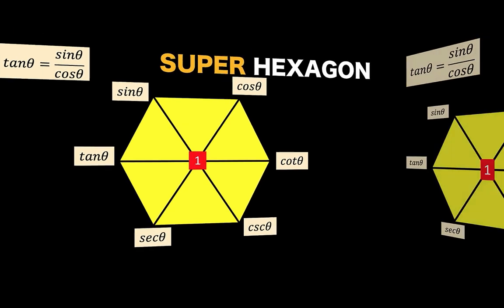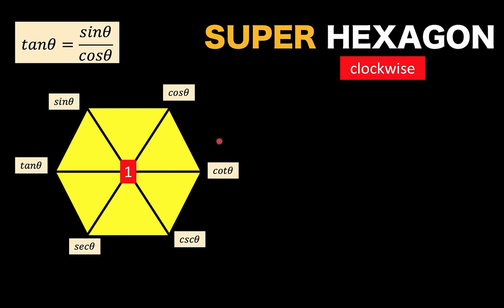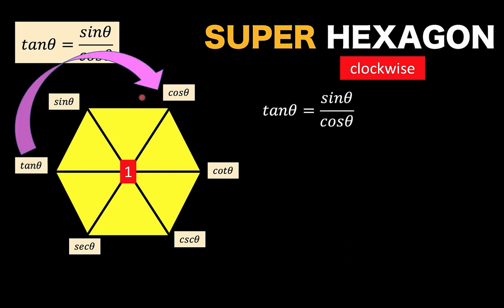Now let's use this super hexagon to generate trigonometric identities. The first set of identities is generated by rotating clockwise around the hexagon. For example, with tangent, sine, and cosine — rotating in the clockwise direction, you can form the basic identity: tangent theta equals sine theta over cosine theta.